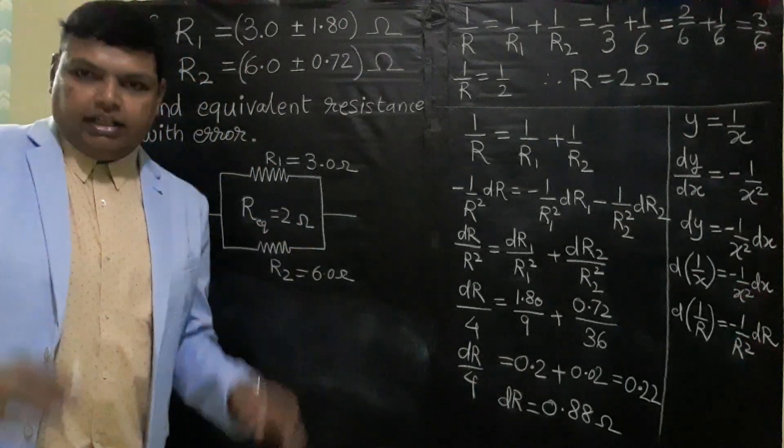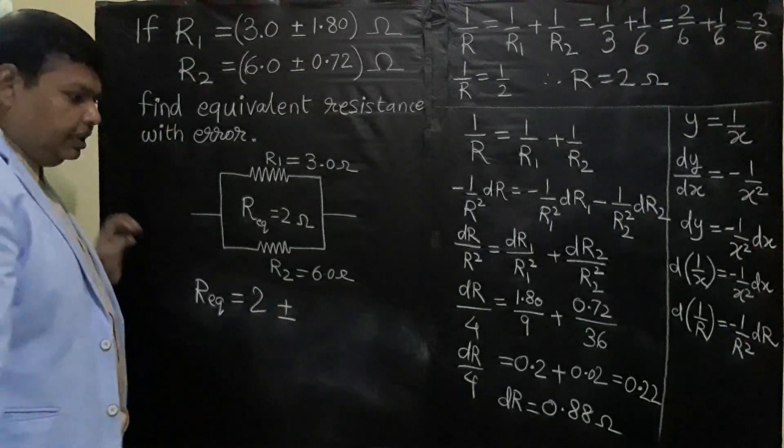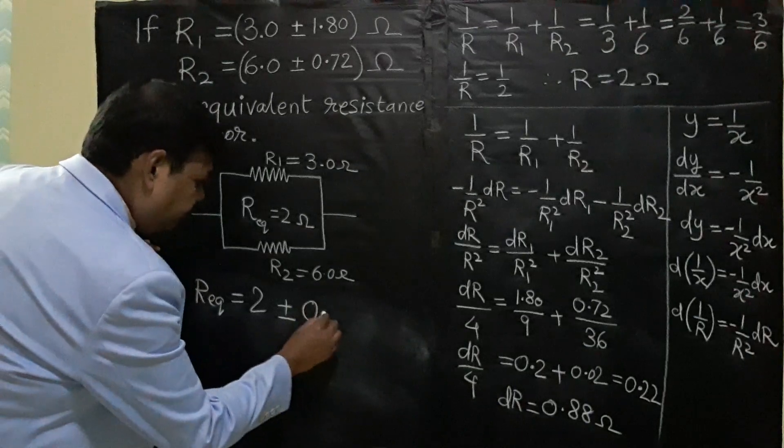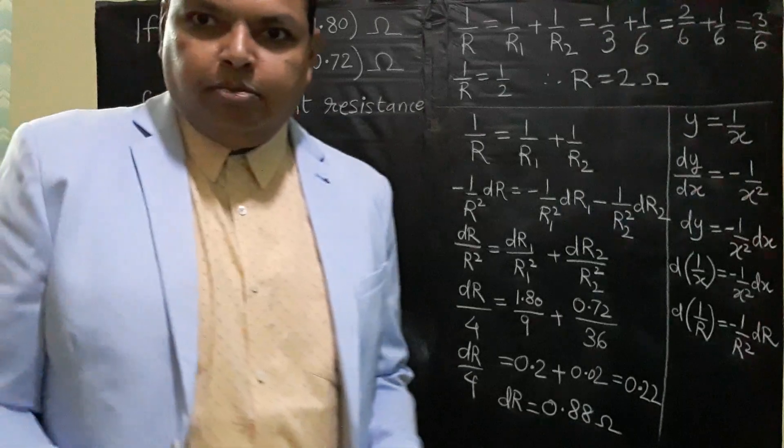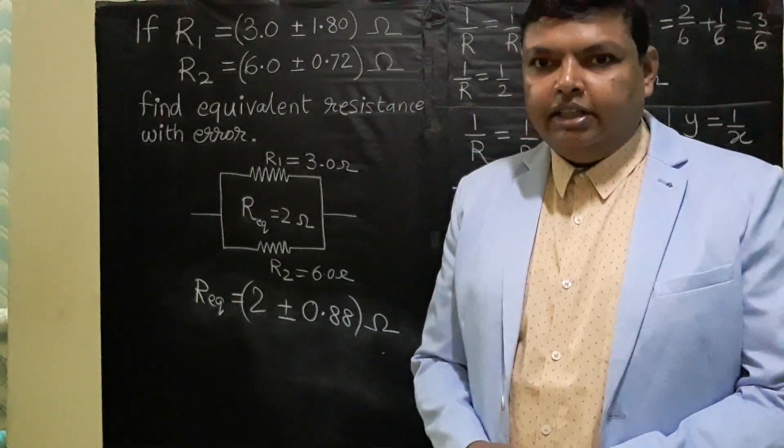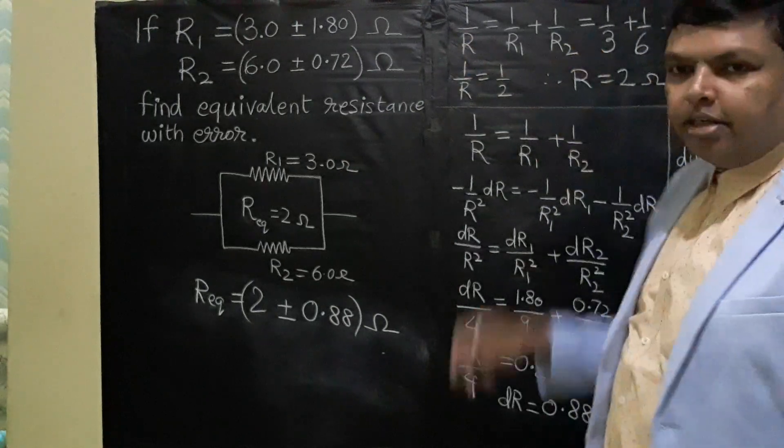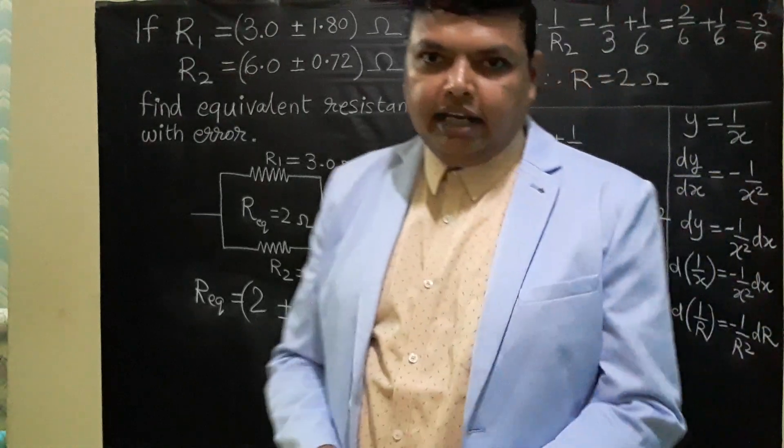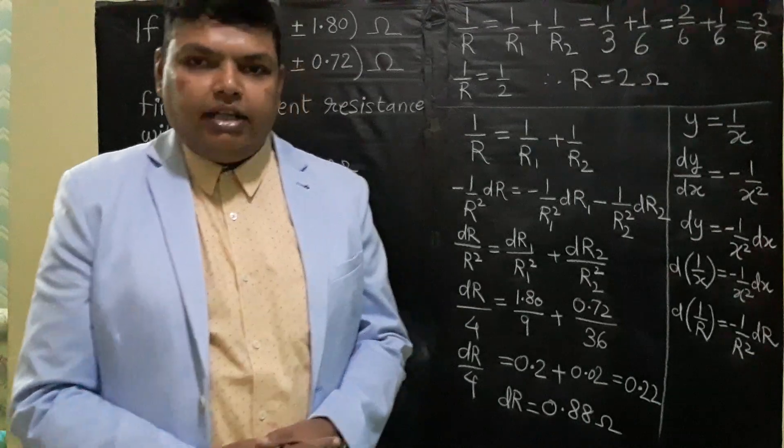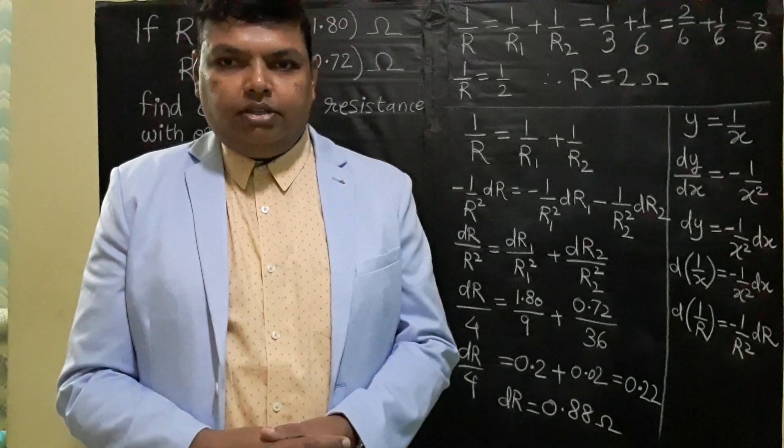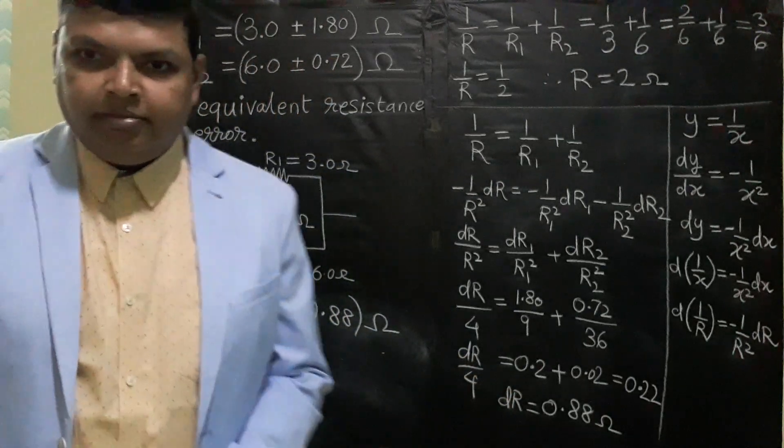The final answer is R_equivalent = 2 ± 0.88 ohms. Whenever we have a sum of reciprocals, where the reciprocal of the final result equals the sum of reciprocals, we use the differentiation method to find the error. One more such formula in physics is about lenses or mirrors: 1/f = 1/v + 1/u. In that case also we find error using the same differentiation method. Thanks for watching the video.